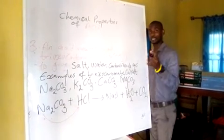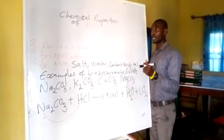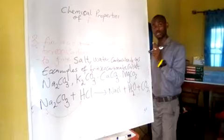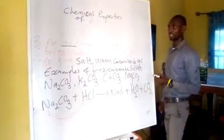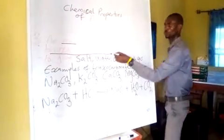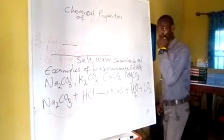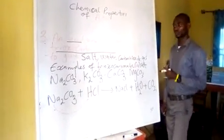Today, we want to look at chemical properties of an acid. One of the chemical properties of an acid is the reaction of acid with trioxocarbonate salts.